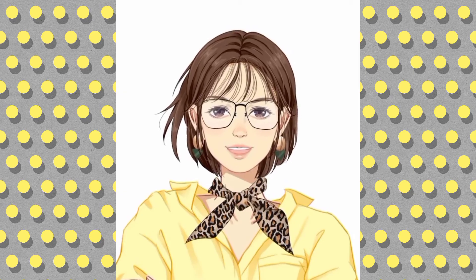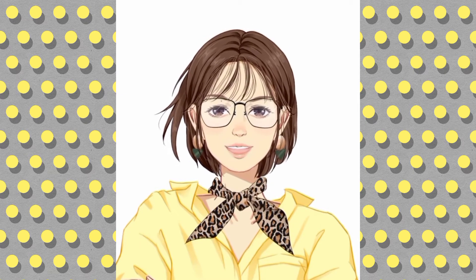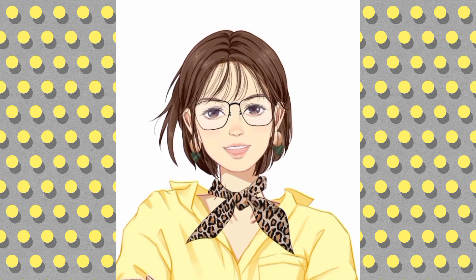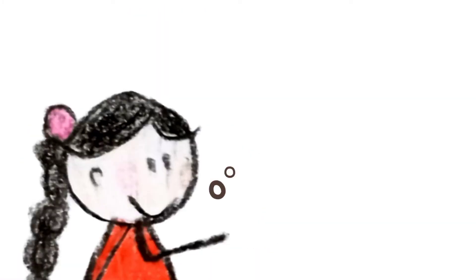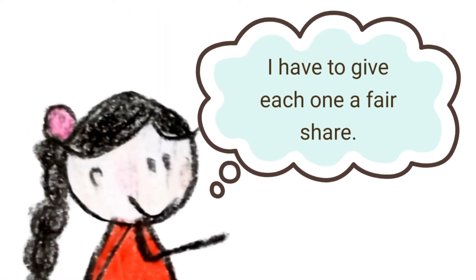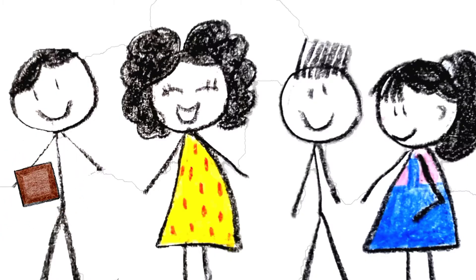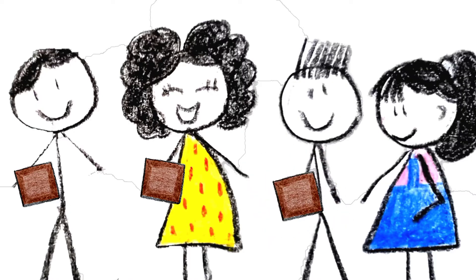A very good girl named Janice wants to share her chocolate with her friends. She says: I want to share this bar of chocolate with my friends. I want them to also have a taste. But I have to give each one a fair share. One part for Tony, one part for Sheila, one part for Ben, and one part for Annie.